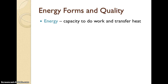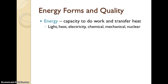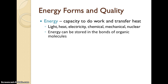Before we look at our energy laws, let's give an overview of what energy is: it's the capacity to do work and transfer heat. Some of the types of energy we'll refer to are light, heat, electricity, chemical, mechanical, and nuclear. When energy is passed through the food chain from one organism to the next, it's stored in the bonds of organic molecules. Plants produce glucose through photosynthesis, converting solar energy into chemical energy.